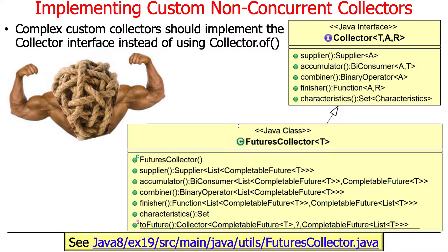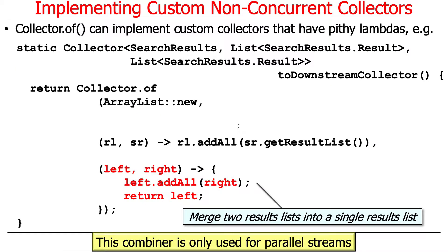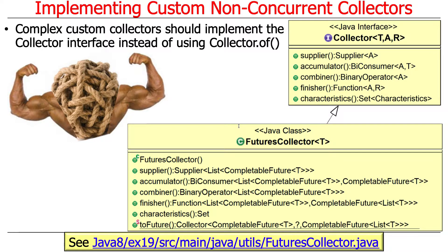These are simple but common examples of creating custom collectors using `Collector.of`. If you have more complex custom collectors — especially ones with sophisticated finishers — you're probably better off implementing the `Collector` interface directly rather than using `Collector.of`, since the parameters can get complicated. An example of a much more advanced collector will be covered later when the course discusses completable futures.